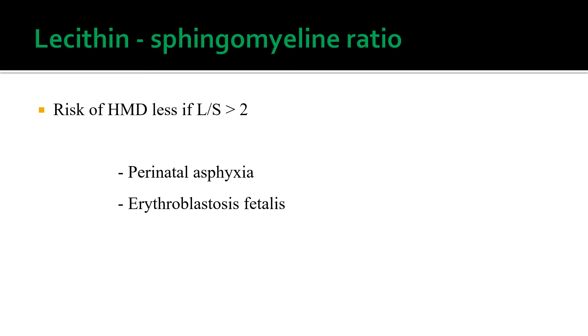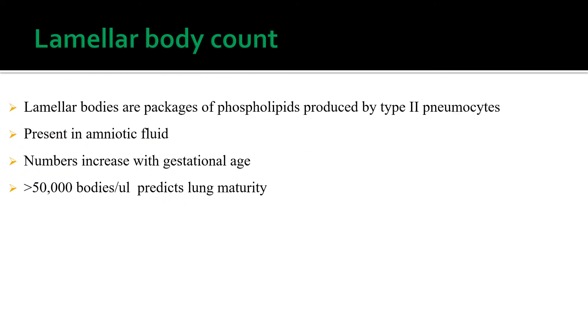Another method is the lecithin-to-sphingomyelin ratio. Fetal lung maturity can be estimated prenatally by examining amniotic fluid obtained by transabdominal amniocentesis for the lecithin-to-sphingomyelin ratio or phosphatidylglycerol. The risk of hyaline membrane disease is less if the ratio of lecithin to sphingomyelin is greater than 2, except in infants of diabetic mothers, cases with perinatal asphyxia, or erythroblastosis fetalis. Additionally, lamellar bodies are packages of phospholipids produced by type 2 pneumocytes present in amniotic fluid; a lamellar body count greater than 50,000 predicts lung maturity.